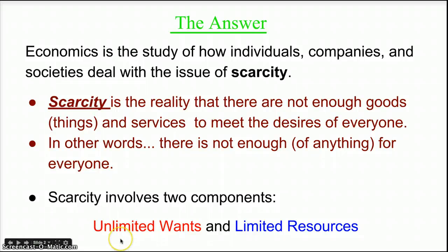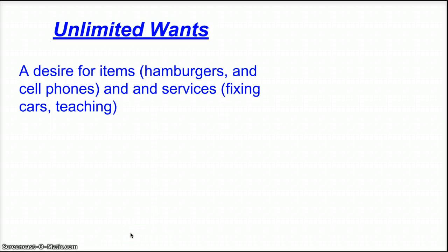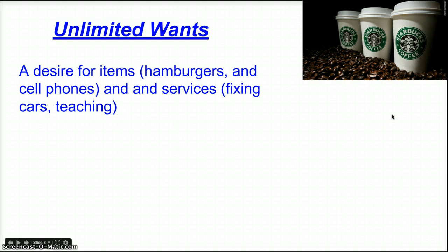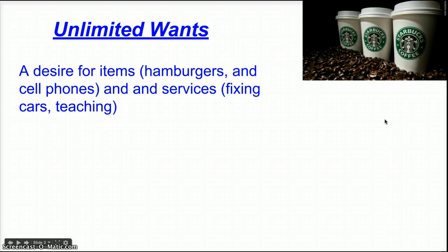Let's start with unlimited wants. Unlimited wants is simply the desire or want for something. We have two basic parts: finished products and services. Finished products are things that you want to consume — literally like hamburgers — or things you use, like your cell phone. A cup of coffee, obviously, is an important part of lots of people's mornings. It's a product that most of us can't imagine going without. This is a finished good that you and I consume on a regular basis.